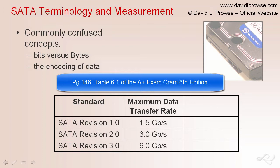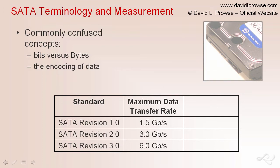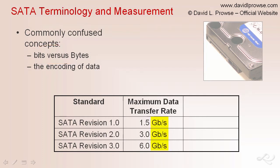On page 146, we have the standards — the various SATA revisions up to 3.0 — and their maximum data transfer rates. This is the amount of data that can be transferred to the drive over the SATA cable per second. First, let's talk bits versus bytes. Note that it shows the serial measurement in bits.